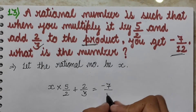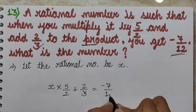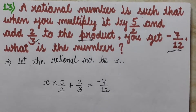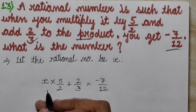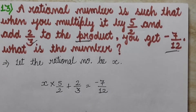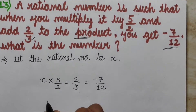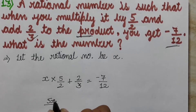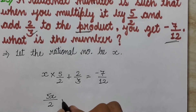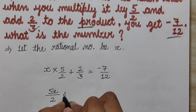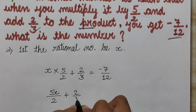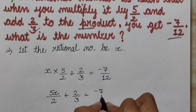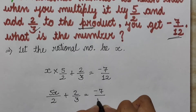The answer is minus 7 upon 12. So this is our equation. We must solve it: x into 5 upon 2, plus 2 upon 3, equals minus 7 upon 12.